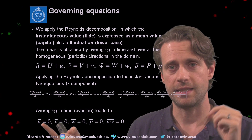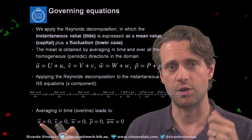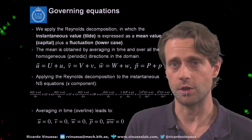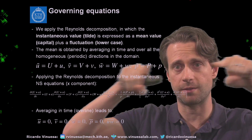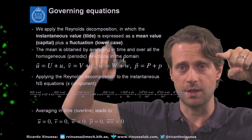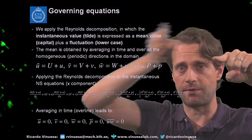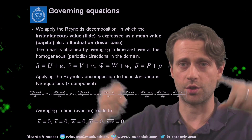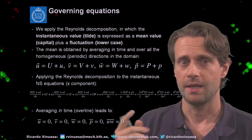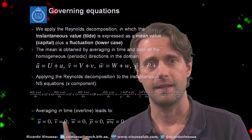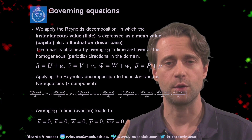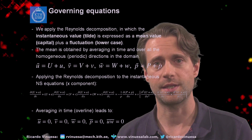This average in time will lead to the following result: the mean in time of the fluctuations will be zero, by definition, because those fluctuations are defined with respect to a mean value. So if I average those fluctuations, I will get zero. So basically u-bar, v-bar, w-bar, p-bar, and u'v'-bar will all be zero.